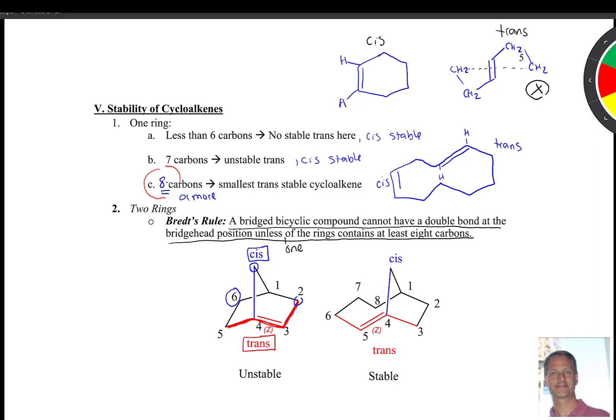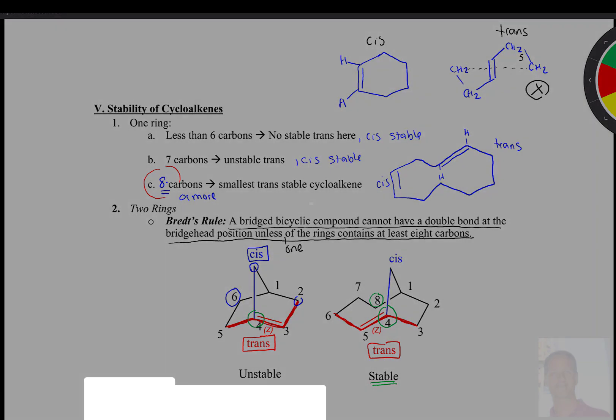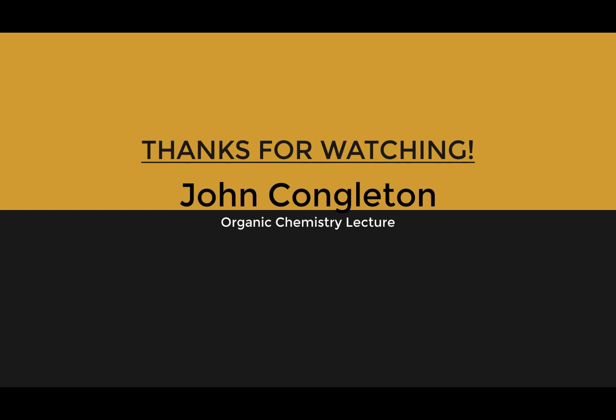So we look on the other side and count: one, two, three, four, five, six, seven, eight — that's eight carbons in one of the rings. It just has to be one of them, not both. That pattern flowing right here is trans. Remember, this is the bridge head position here. In that case, you're stable because you have trans at the bridge head with that magic number of eight carbons. So we want to be looking for that as we analyze whether we have a stable cycloalkene or bicyclic compound.